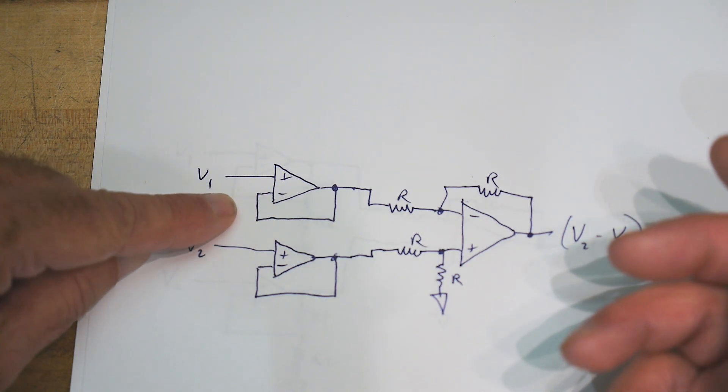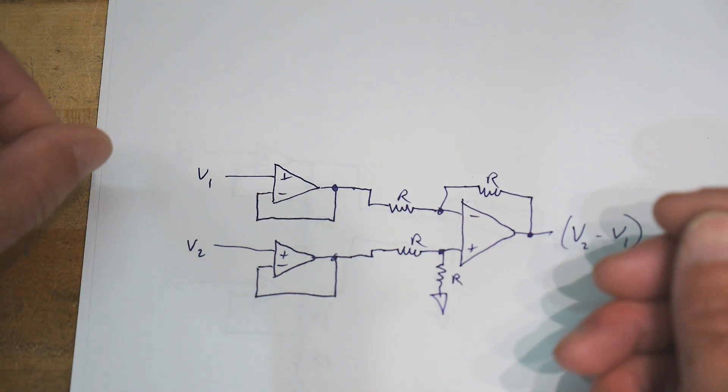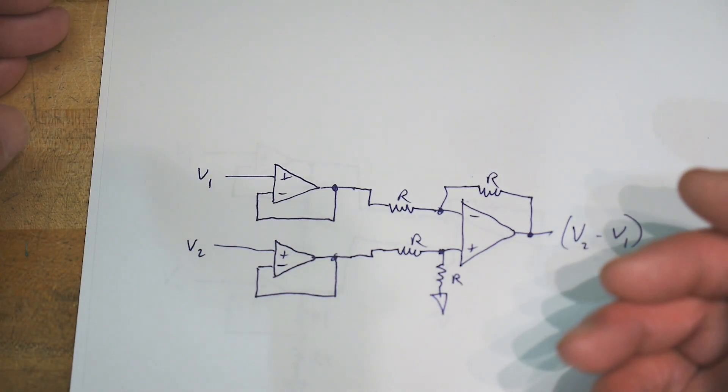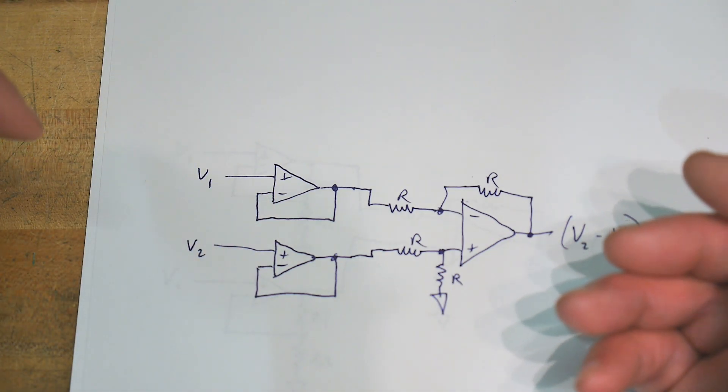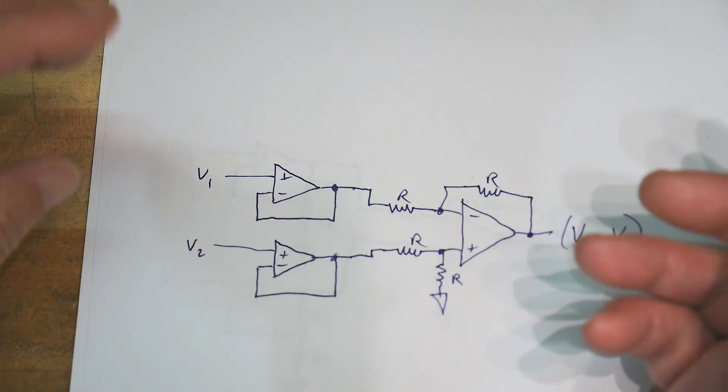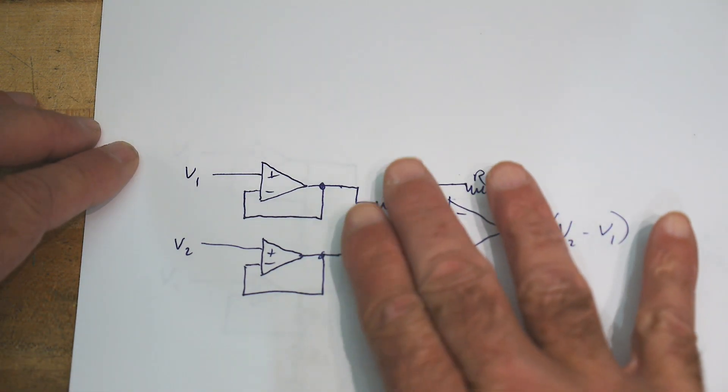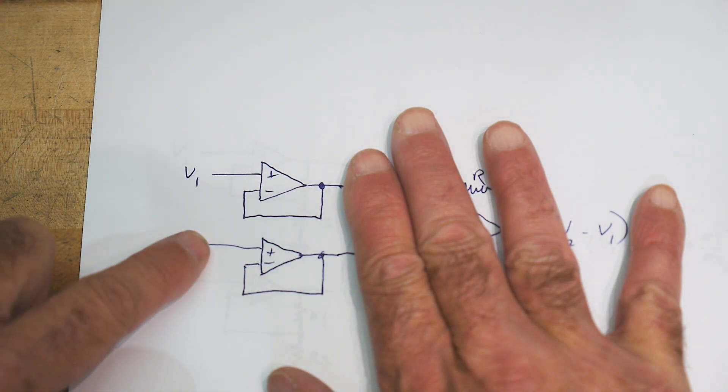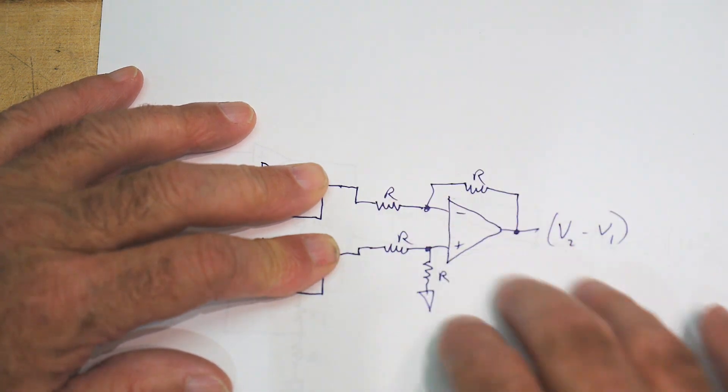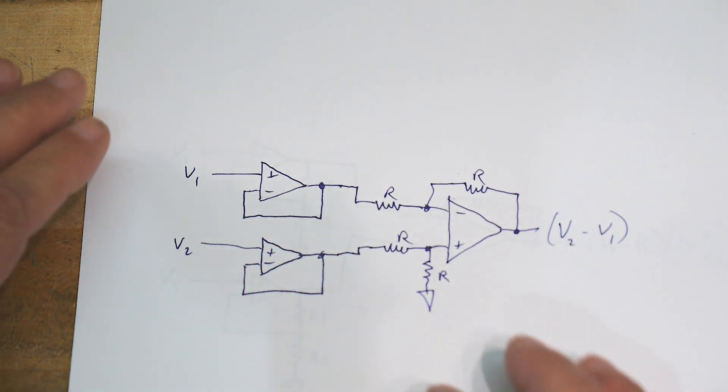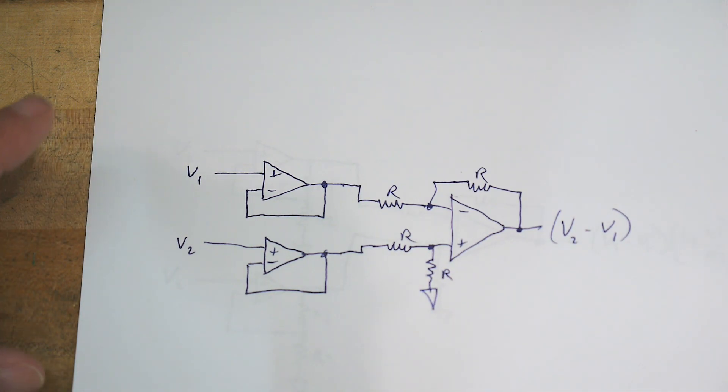If these are JFET input op amps, these might have 50 megohms of input impedance or something ridiculous. Certainly in the megohms of input impedance would be very similar for a generic JFET input op amp. You could just buffer the two voltages first so you have very high input impedances, and then the output can drive the differential amplifier. We would have V2 minus V1 on the output.